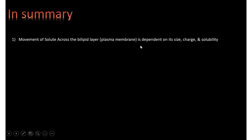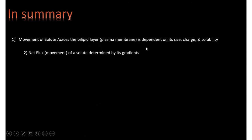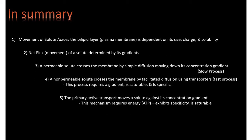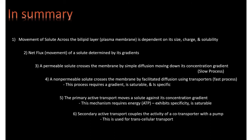In summary: movement of solute across a bilayer depends on size, charge, and solubility. Net flux is solute movement determined by gradient. Permeable solutes cross by simple diffusion — slow, down their gradient. Non-permeable solutes cross by facilitated diffusion using transporters — faster, saturable, and specific. Primary active transport moves solute against its gradient requiring ATP, and is specific and saturable. Secondary active transport couples co-transporters with a pump for transcellular transport.